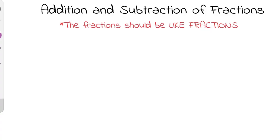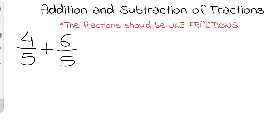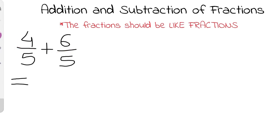For example, you have two fractions: 4/5 plus 6/5. These are like fractions because the denominator is the same. Simply look at the numerators and perform the operation. We add 4 and 6 to get 10, and the denominator remains the same, that is 5. So the answer is 10/5.